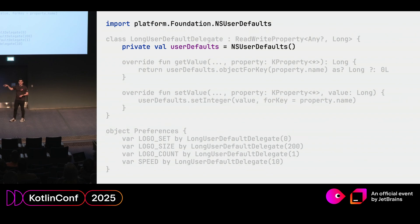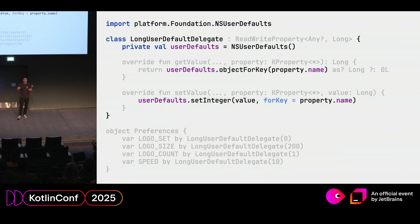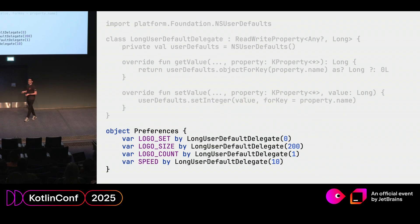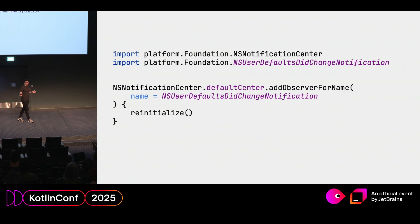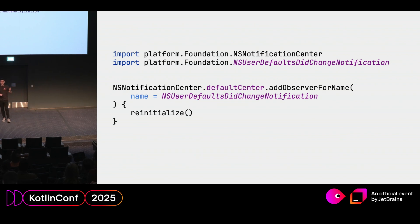To store these preferences, you can use NSUserDefaults — the same key-value storage API on macOS. You just instantiate it and it's a simple key-value store. Because we're writing Kotlin, we can use all the cool Kotlin features. For example, I wrapped it in a delegate class so that every property is automatically persisted in user defaults under the hood. You can also sign up for notifications to observe changes in user defaults and pass in lambdas as callbacks — it plays really nicely with Kotlin.